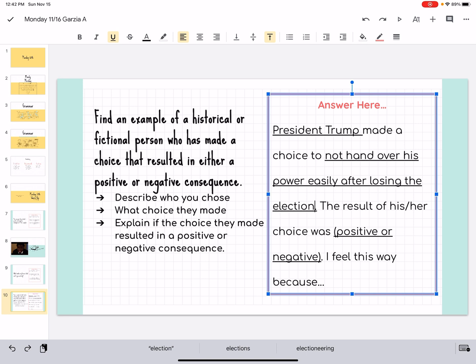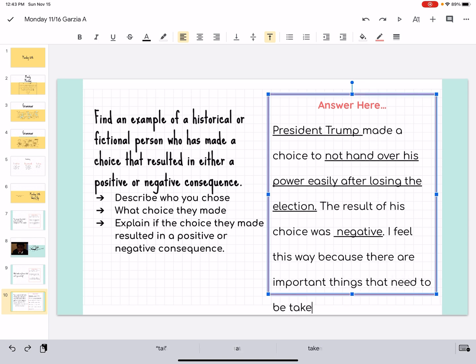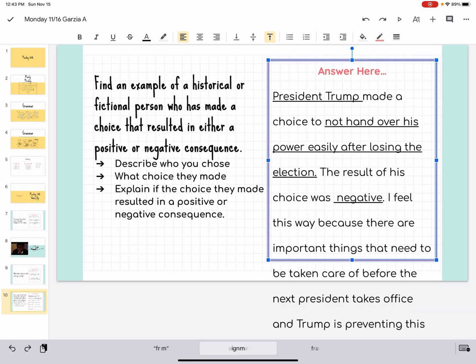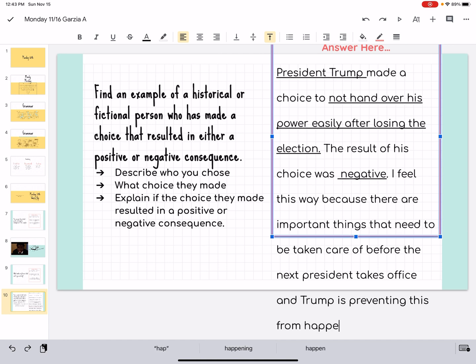Okay? The result of, and you can, and we know it's a his, so we can take her out. The result of his choice was, oh, excuse my cough, negative. I feel this way because there are important, let's see, important things that need to be taken care of before the next president takes office, and Trump is preventing this from happening, okay?